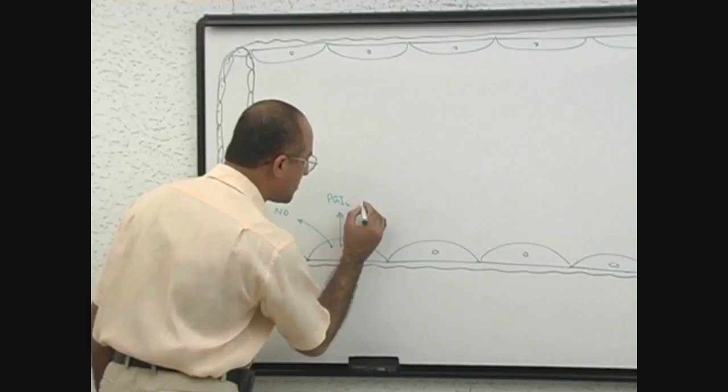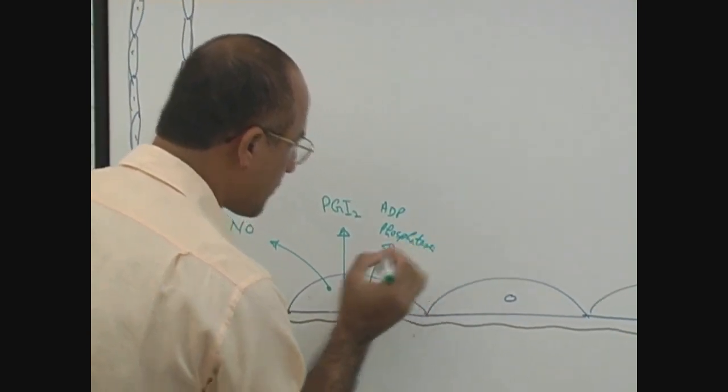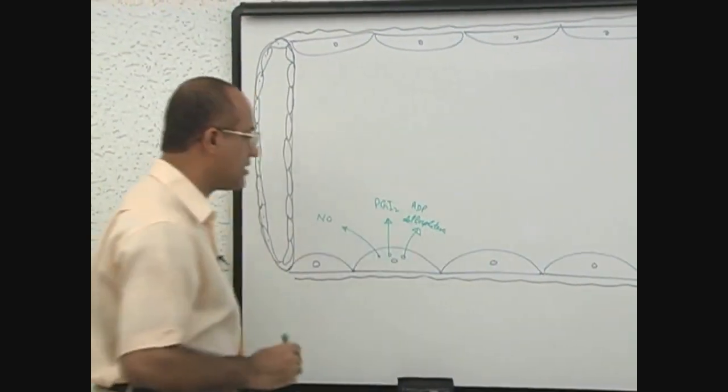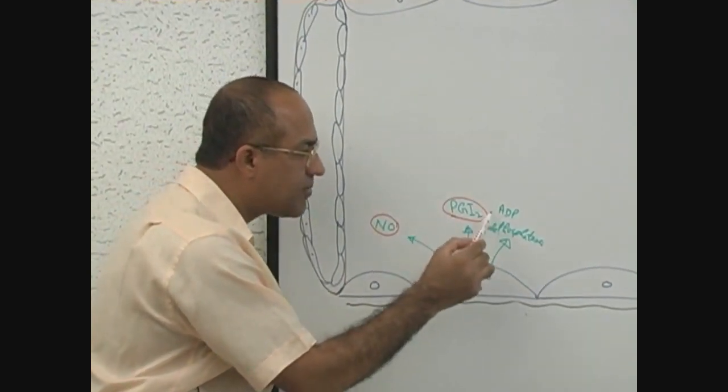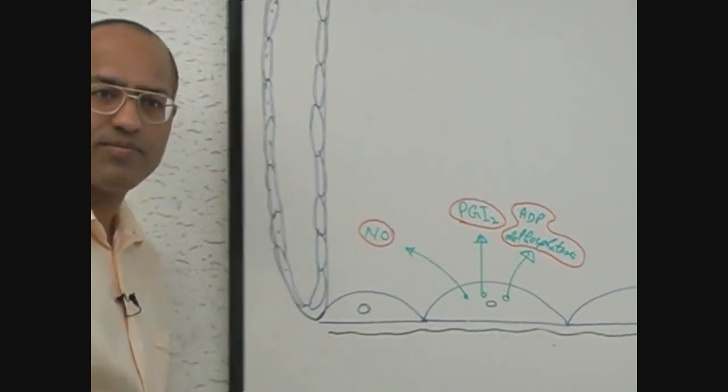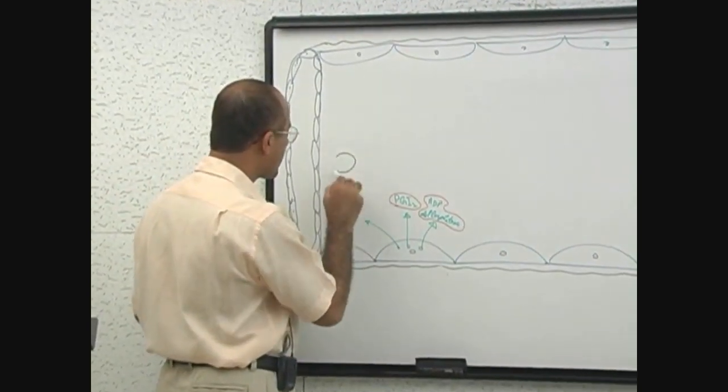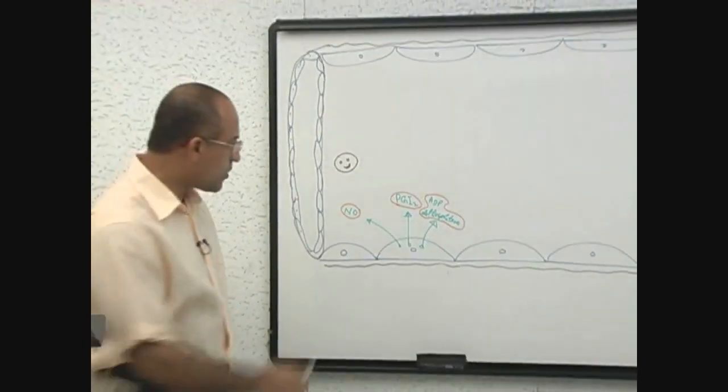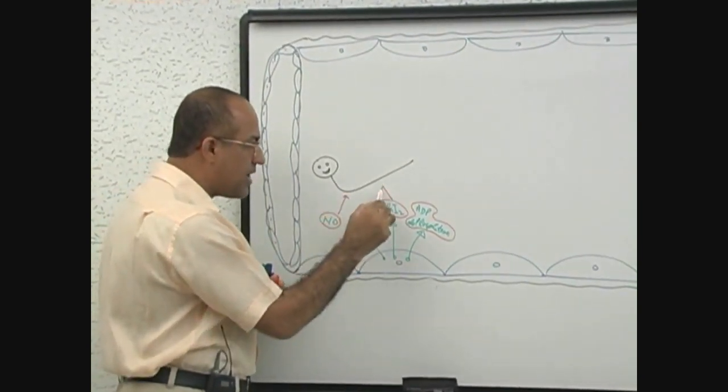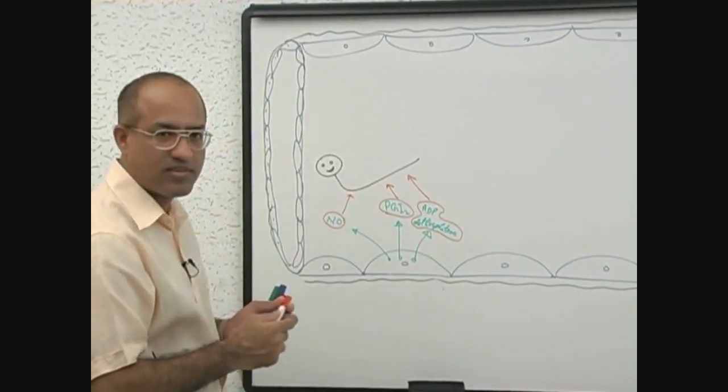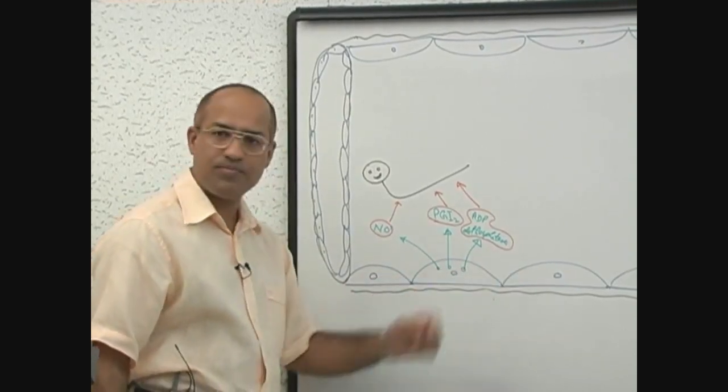ADP dephosphatases, special enzymes. Now listen, what are these products doing? These are very important. These products are said to be antiplatelet agents. They don't allow platelets to stick. Let's suppose here is a platelet and it wants to stick over here, but it is repelled. Repelled by what? It is repelled by nitric oxide, repelled by prostacyclins, repelled by ADP dephosphatases. All these substances don't allow the platelets to stick to the endothelial surface.